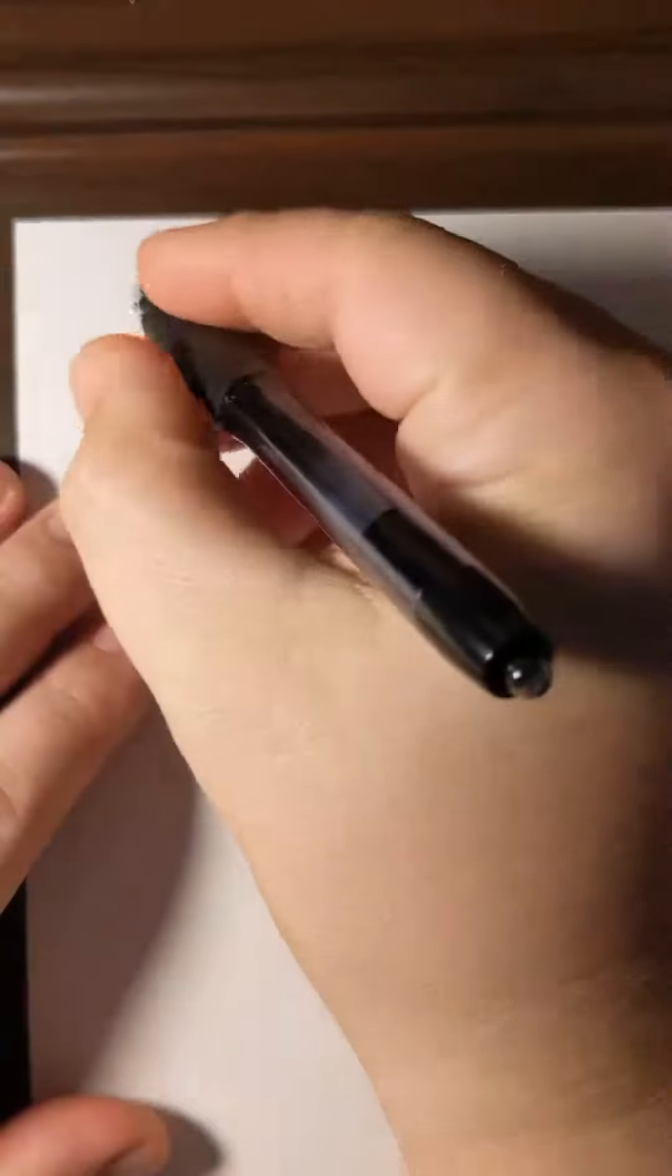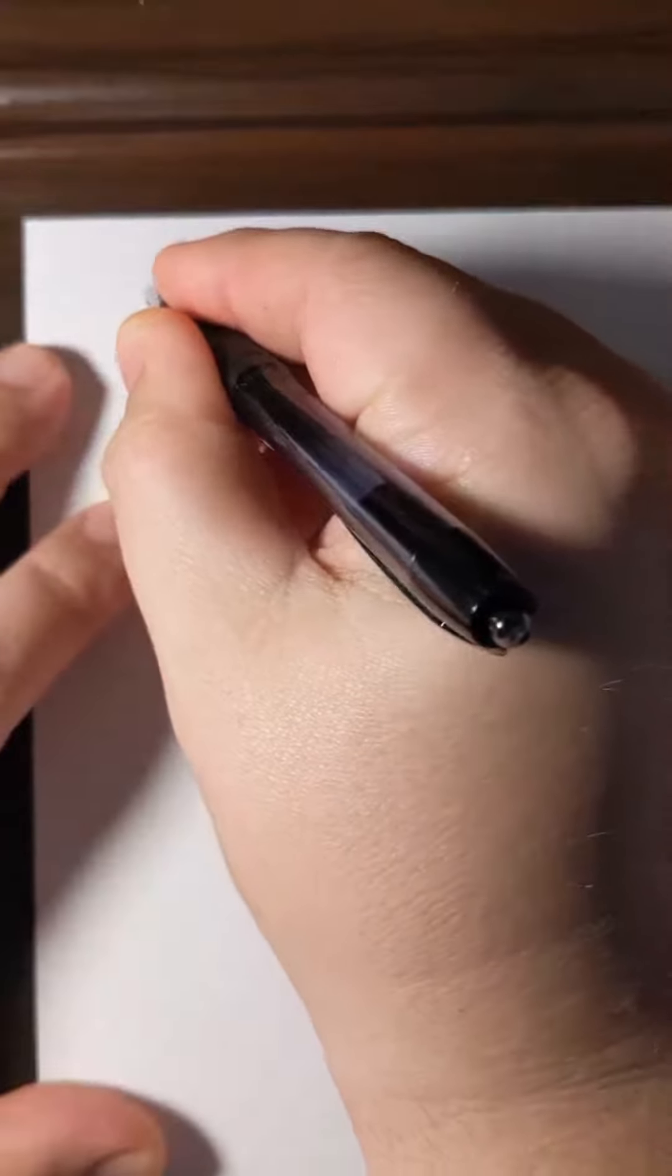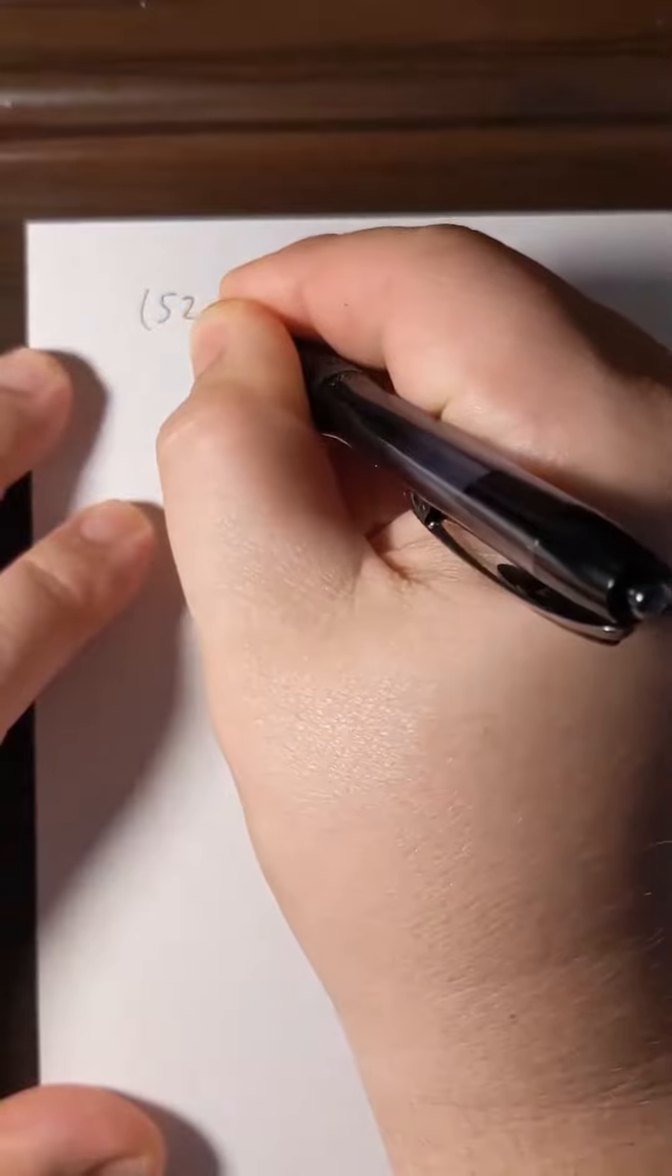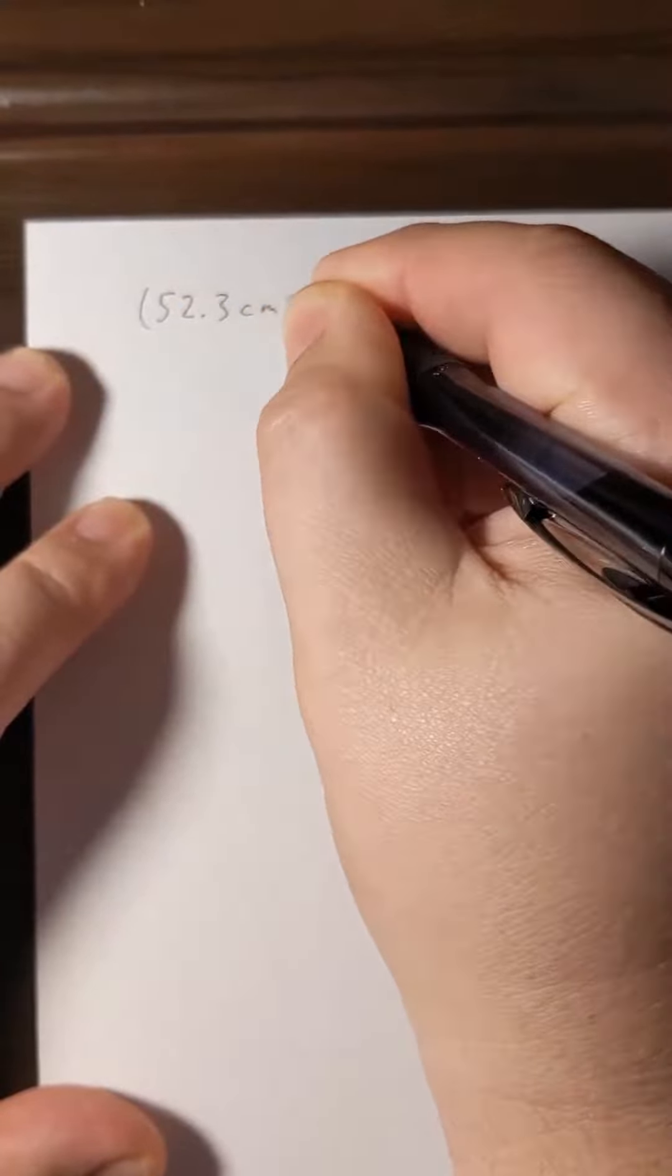In this problem we want to look at how we do unit conversions, and we're going to convert 52.3 centimeters into meters. We will begin by writing out the value that we have to start with, our 52.3 centimeters.